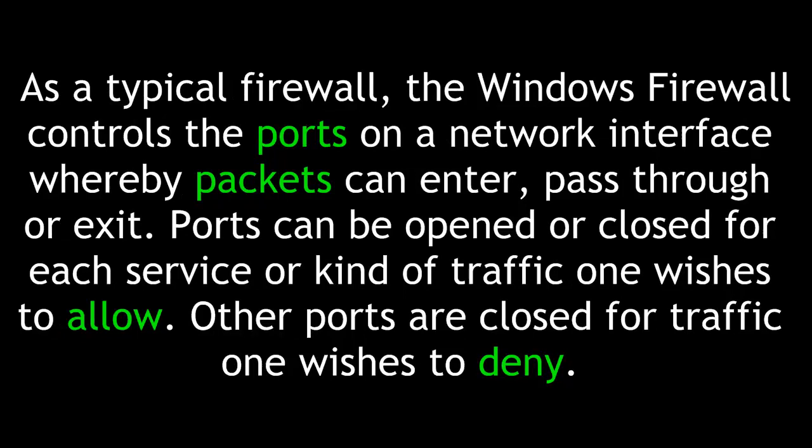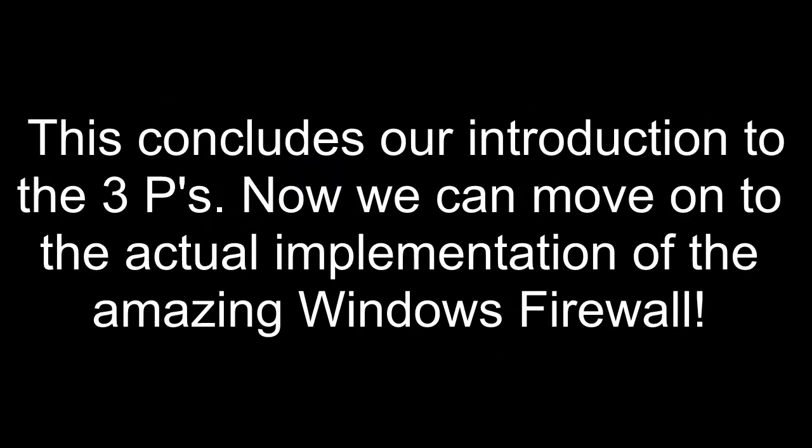As a typical firewall, the Windows Firewall controls the ports on a network interface where packets can enter, pass through, or exit. Ports can be opened or closed for each service or kind of traffic one wishes to allow, while other ports are closed for traffic one wishes to deny. This concludes our introduction to the three P's. Now we can move on to the actual implementation of the Windows Firewall.